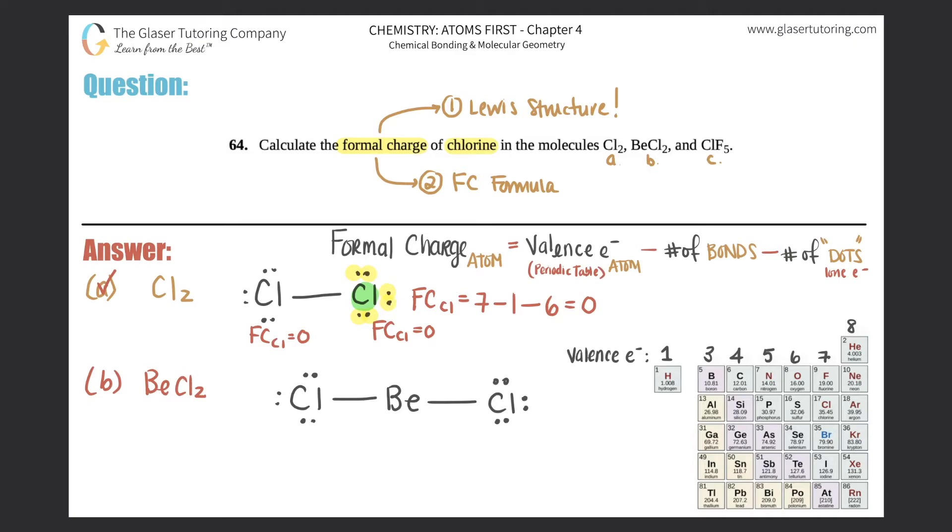just like that. Now, they're only asking for the formal charge of chlorine, so we don't even care about beryllium, right? We just care about these chlorines, and they're literally exactly the same. This chlorine has one bond and three lone pairs. So whatever you find out for one of them, the other one will be the exact same formal charge. But hey, in A,